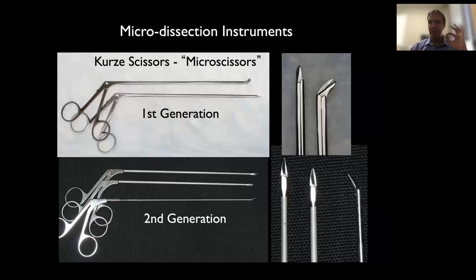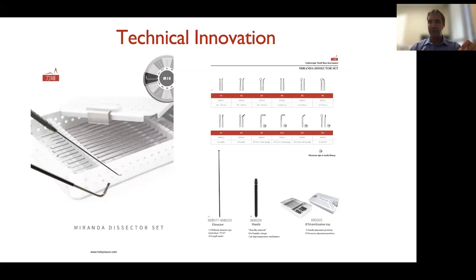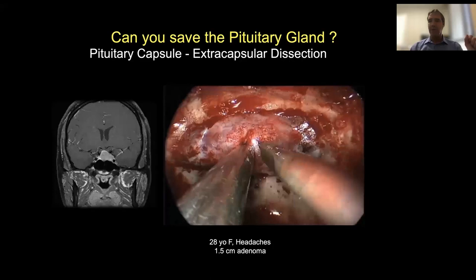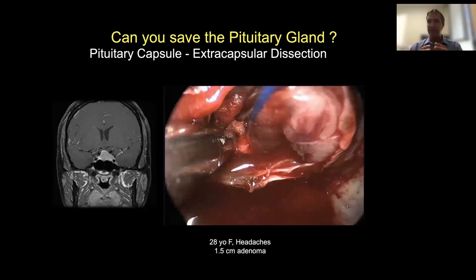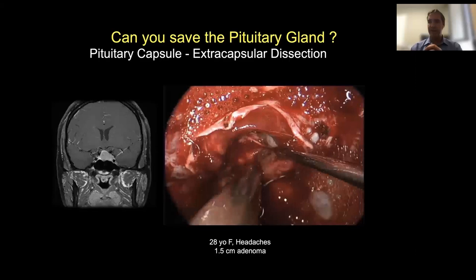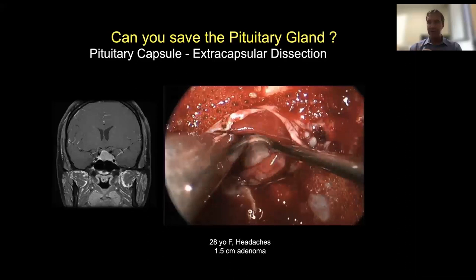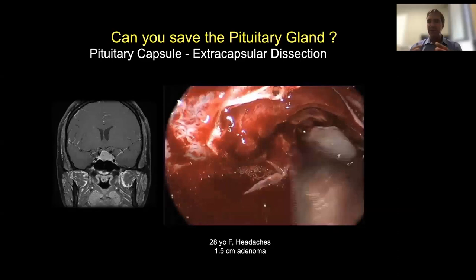We use special long instruments — these are micro scissors. I have developed my own set of instruments to do these operations, which allow me to open the cavernous sinus and the optic canals when needed. One of the most common questions patients ask is whether we're going to damage their gland. These tumors come from the pituitary gland, but there is always a good plane of separation between the gland and the tumor. The gland and tumor look different — different consistency, color, and texture — so you can really separate one from the other.